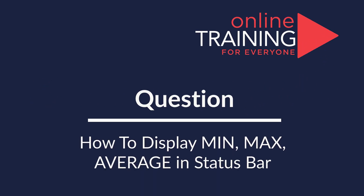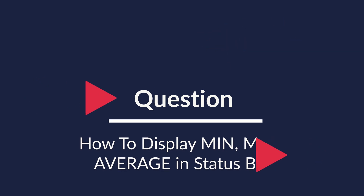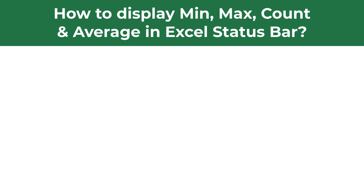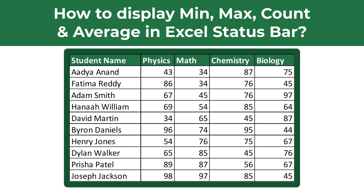Very frequently on the test, you get a question about usage of formulas in Excel, and sometimes a question on how to display data in the status bar. For example, let's look at how to display minimum, maximum, count, and average in the Excel status bar. You are presented with the dataset of student grades, which displays student names and their grades in physics, math, chemistry, and biology. Do you know how to add auto calculations for their grades in the status bar?